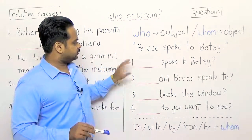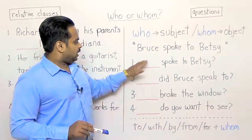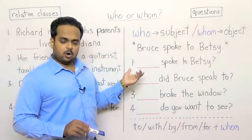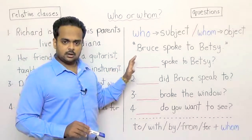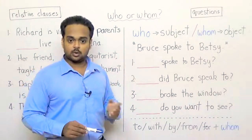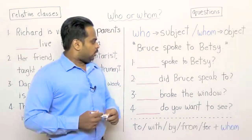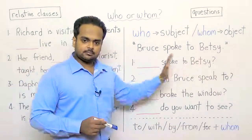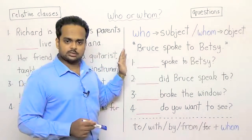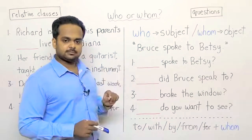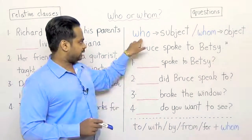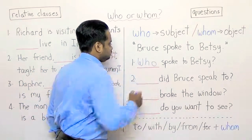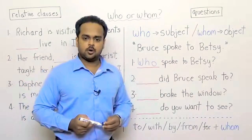Take a look at these two questions. There's a blank — blank spoke to Betsy. Now here we want to fill in this blank with either who or whom. If you read the sentence you realize that we know someone spoke to Betsy but we don't know who that someone was — that is, we're asking about the subject. So the word for the subject is who. So: who spoke to Betsy.